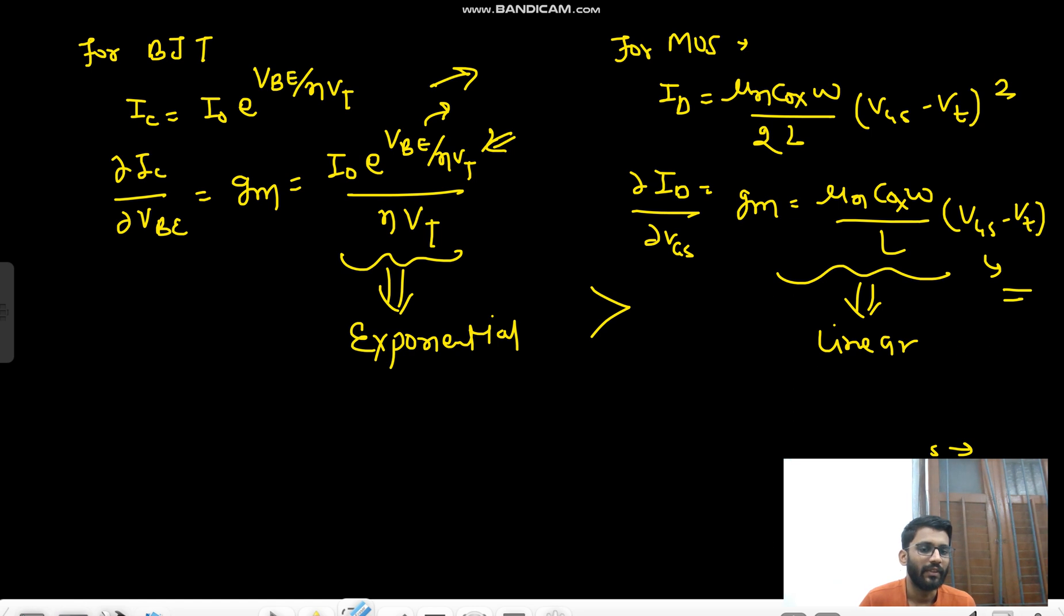I shouldn't draw it like this because we are not seeing the change with respect to VDS; we are seeing the change with respect to VGS, okay? So the change in ID with respect to VGS is very less, okay? The expression is linear expression. While the change in IC with respect to VBE is very high because we have exponential expression. So that's why gm of BJT is higher than gm of MOSFET.